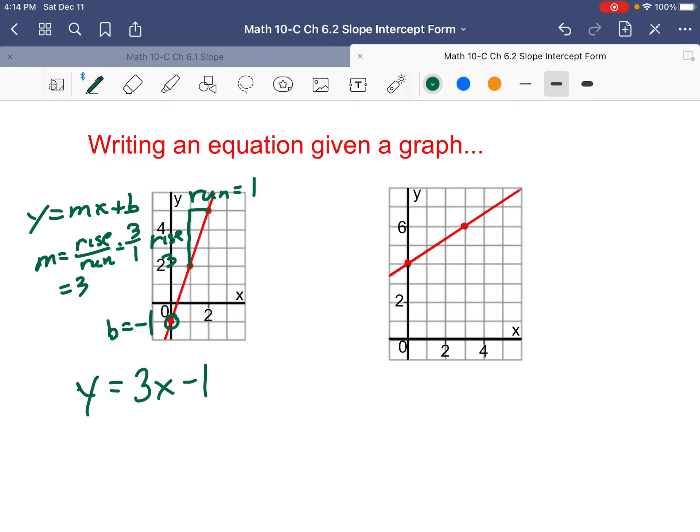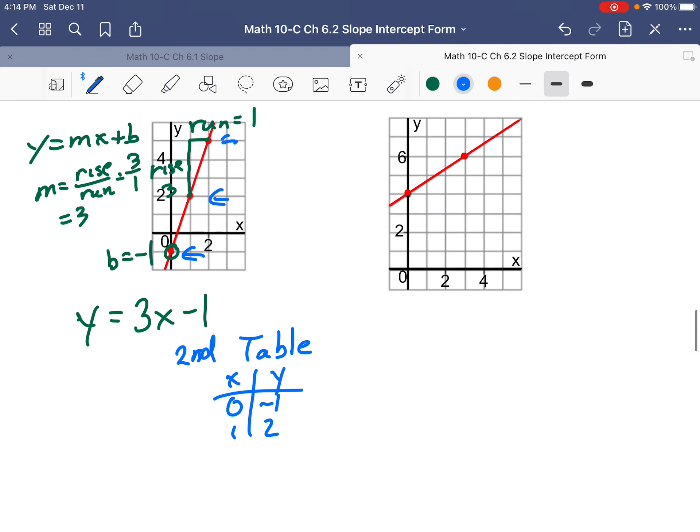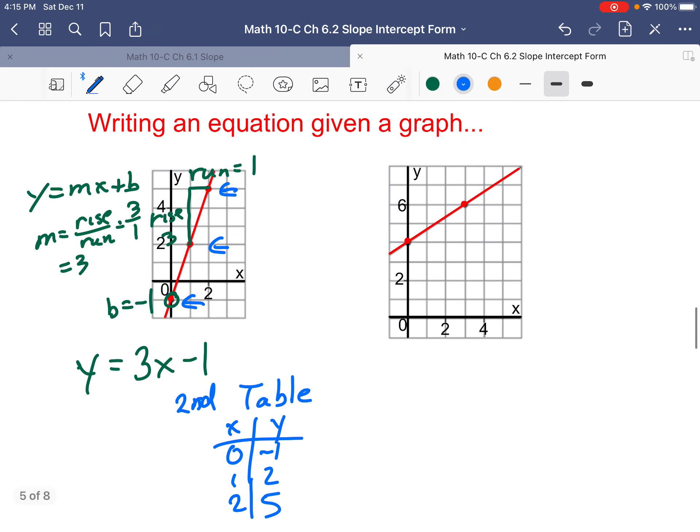So grab your graphing calculator and graph it, y1 equals 3x minus 1, and look at the graph. Do you get the same sort of graph? Now you have to be careful, because it's difficult to tell just depending on your windows and all that. So do that second graph, table of values. Table of values, and look, you see x, y, you see here we have 0 and minus 1, here we have 1 and 2, and here we have x is 2 and y is 5. If we have those same tables of values on your calculator as with this graph, we know we have the correct equation.